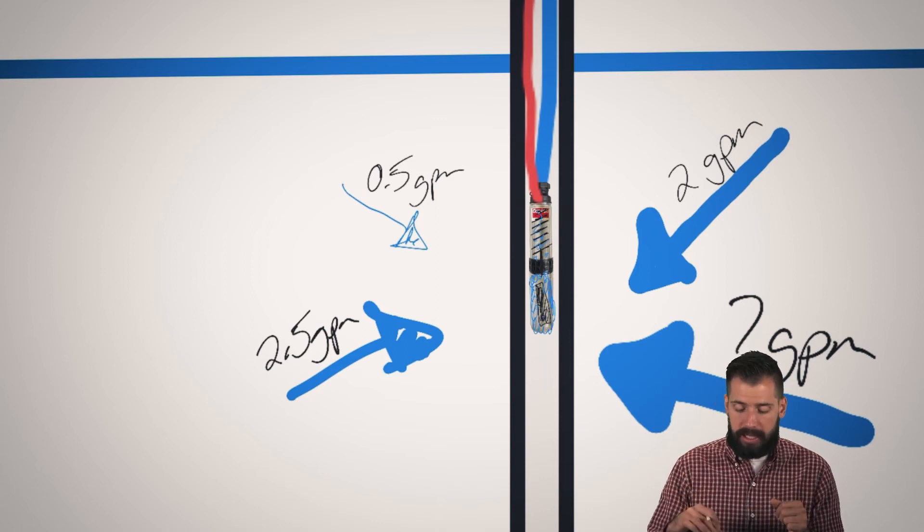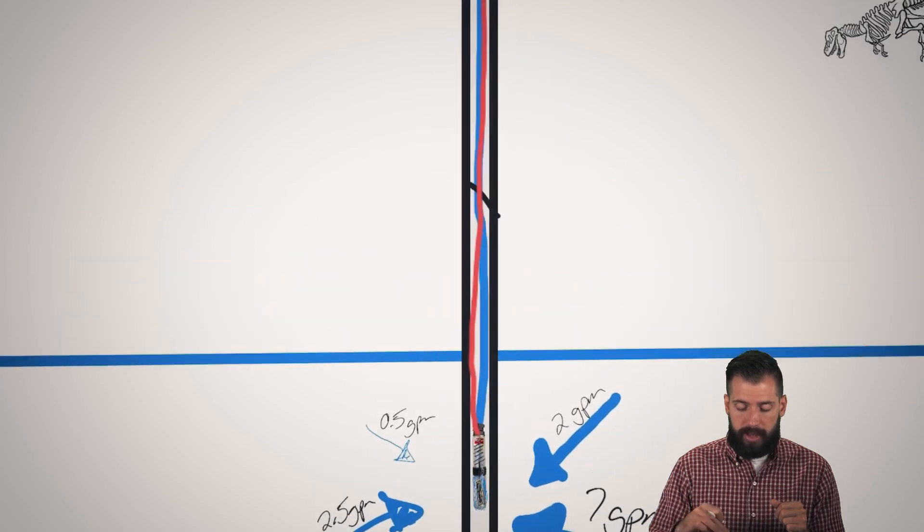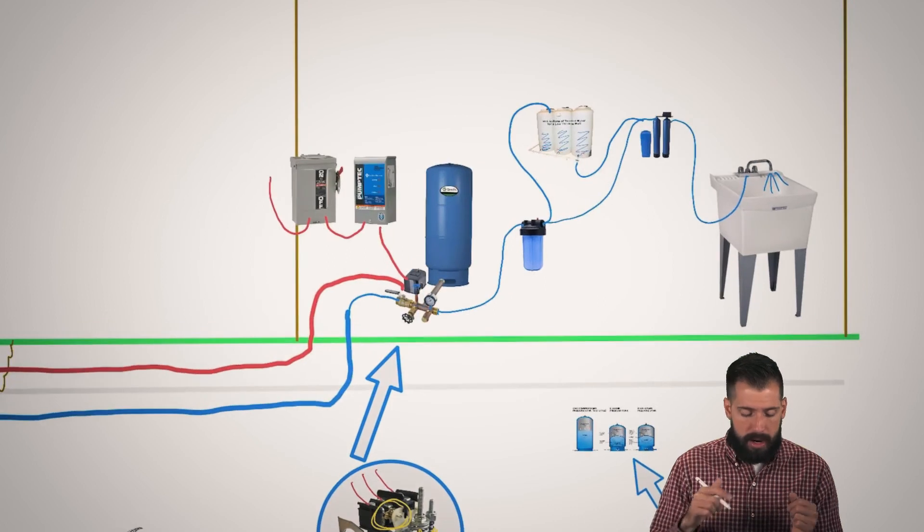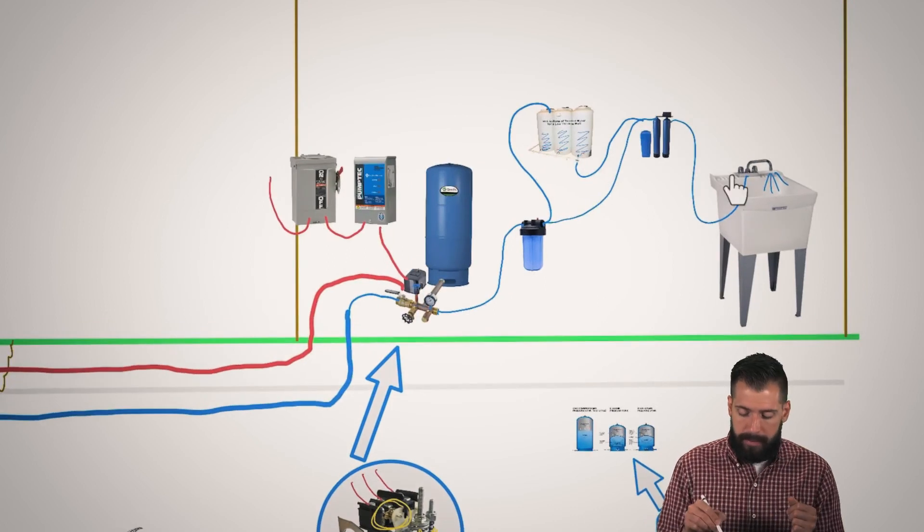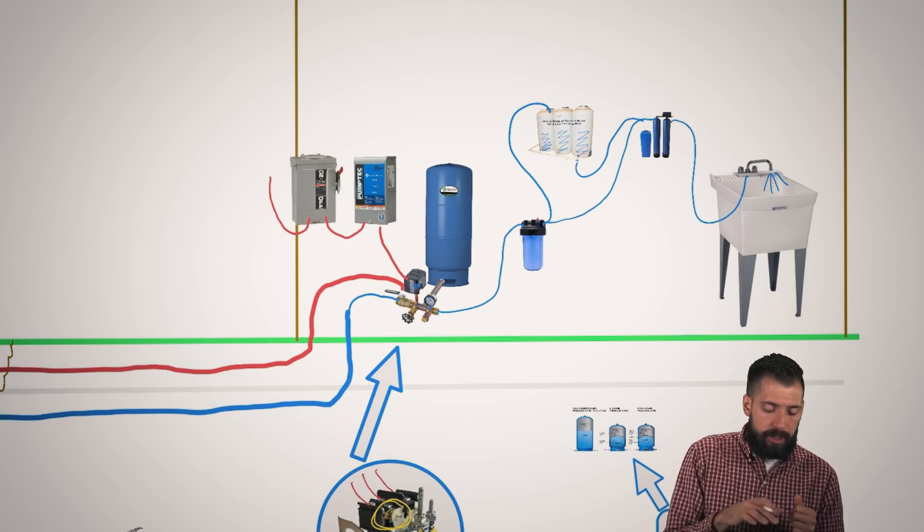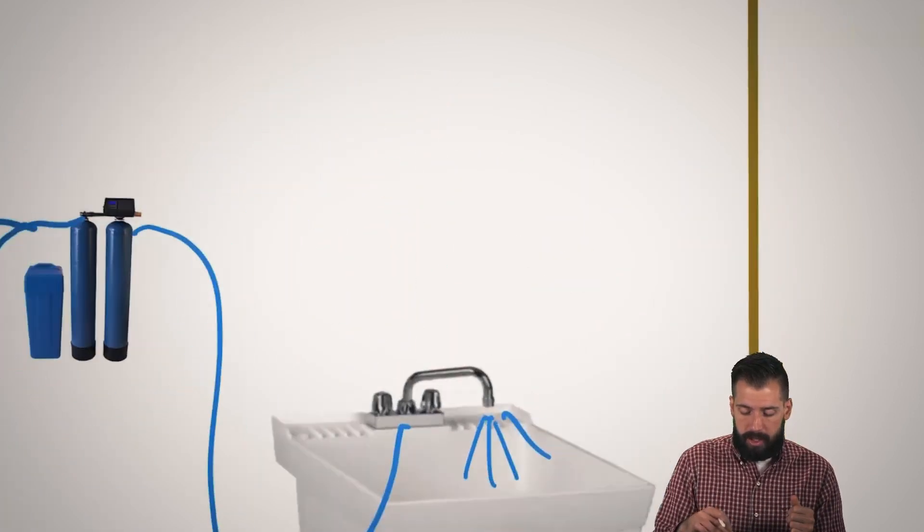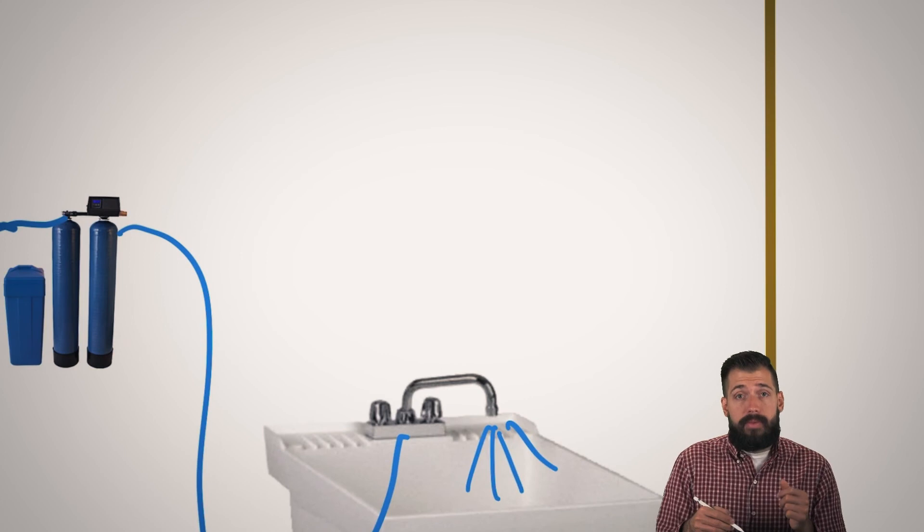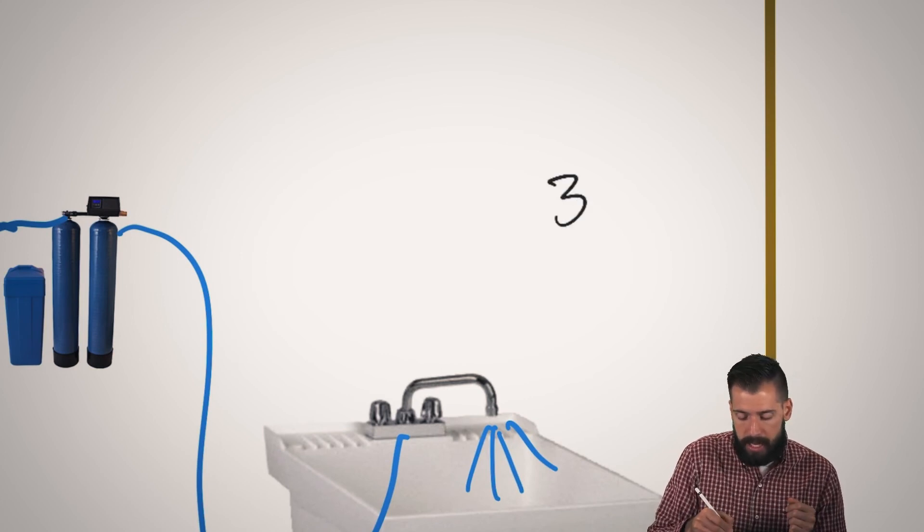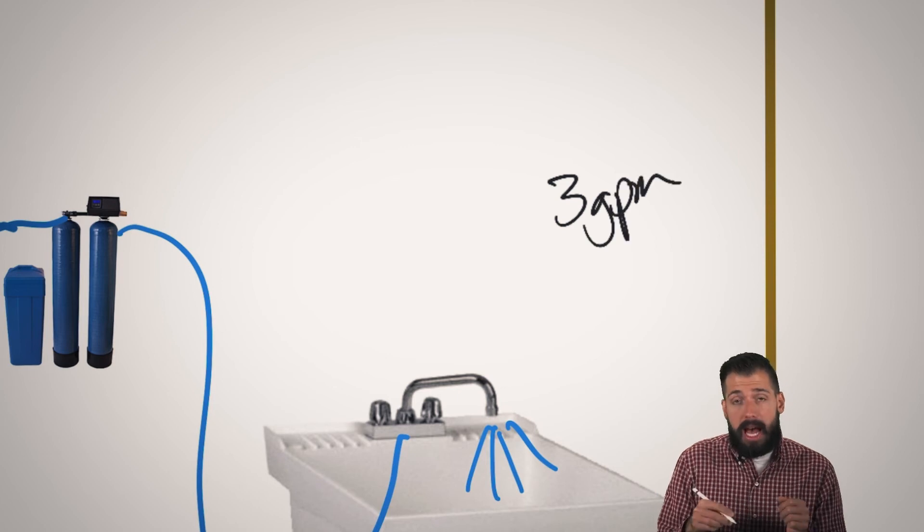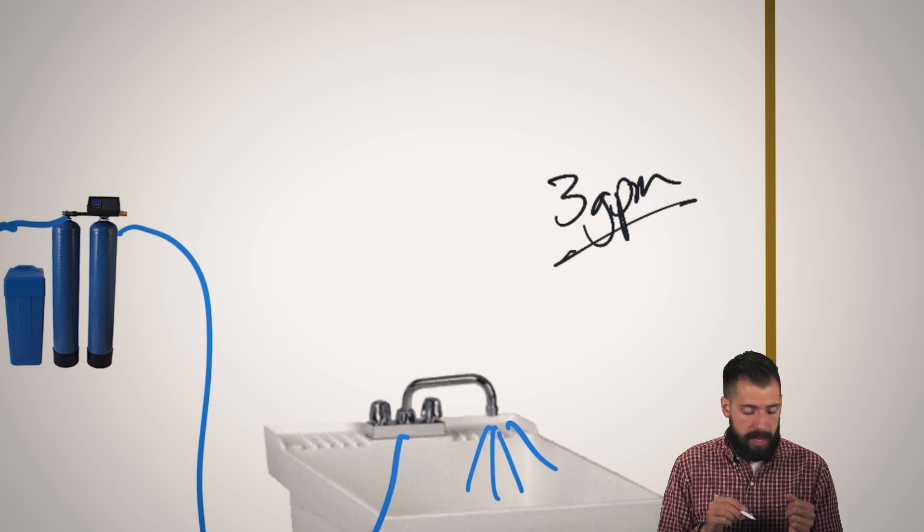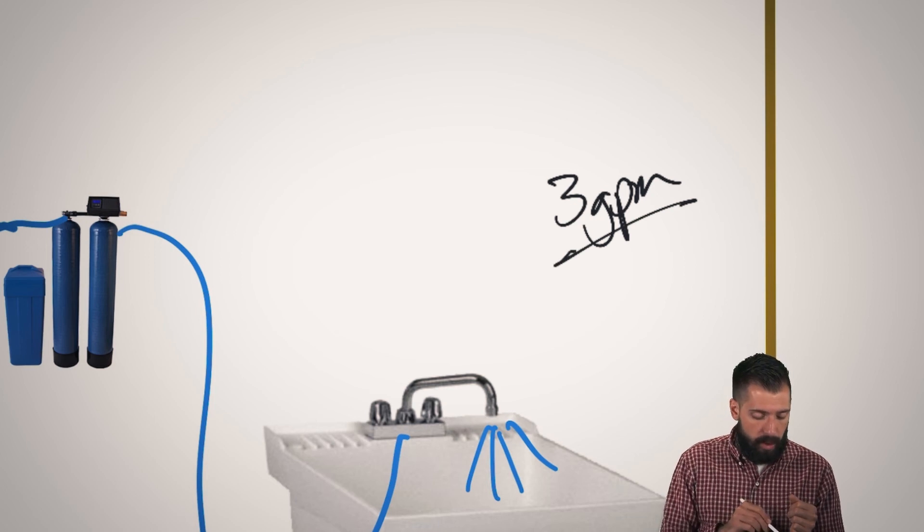We start to run the water for that two hour period of time, and we are running that water, and it's coming out, and we are basically at that point measuring how much water is coming out. After the two hour test, let's say that it makes it and we have three gallons per minute, I would consider three gallons per minute as the bare minimum that we could be at.